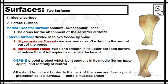The two fossae are the supraspinous fossa and infraspinous fossa. The supraspinous fossa is so called because it is above the spine, and the infraspinous fossa is so called because it is below the spine. The supraspinous fossa is narrow and does not extend to the ventral part of the bone, whereas the infraspinous fossa is wide and smooth at the upper part and narrow below.